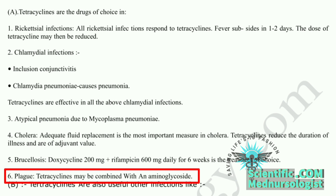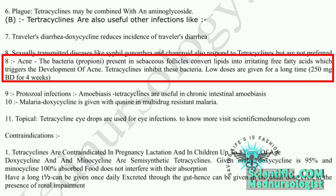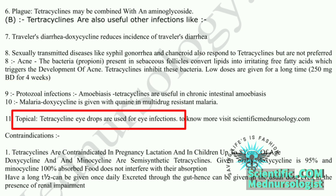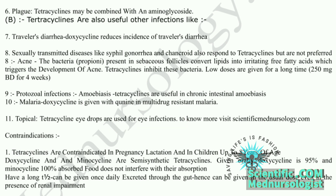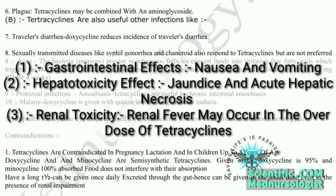Sixth use of tetracycline is acne: the bacteria Propionibacterium present in sebaceous follicles converts lipids into irritating free fatty acids which triggers development of acne, and tetracycline inhibits these bacteria. Low doses are given for a long time — 250 mg BD for 4 weeks. Seventh, topical use: tetracyclines are also used as eye drops for eye infections. Side effects of tetracycline include: first, gastrointestinal effects such as nausea and vomiting; second, hepatotoxicity including jaundice and acute hepatic necrosis; third, renal toxicity — renal failure may occur in overdose.